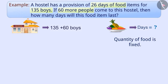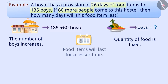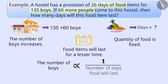The quantity of food items here is fixed. In such a situation, if there is an increase in the number of boys, then the food items will also last for a shorter period of time. So here, the number of boys is inversely proportional to the number of days the food will last.